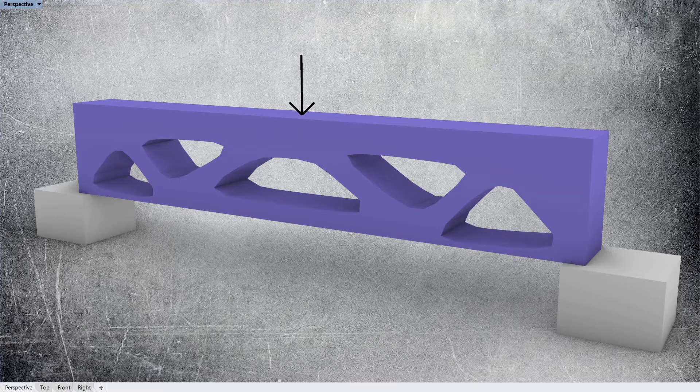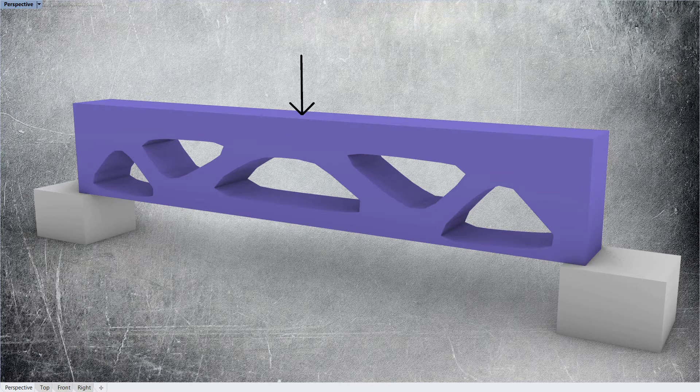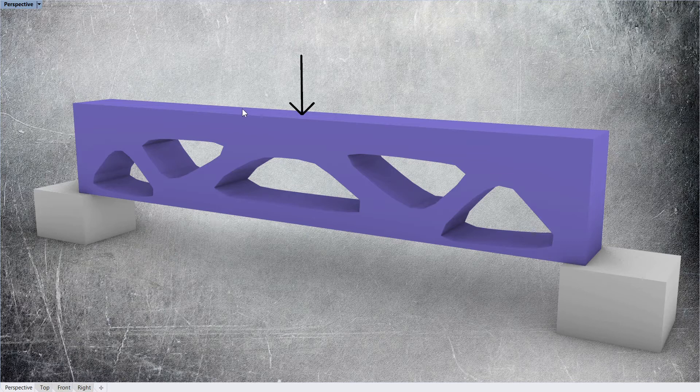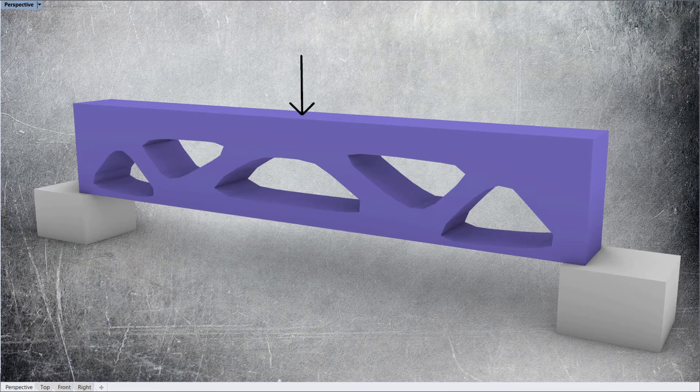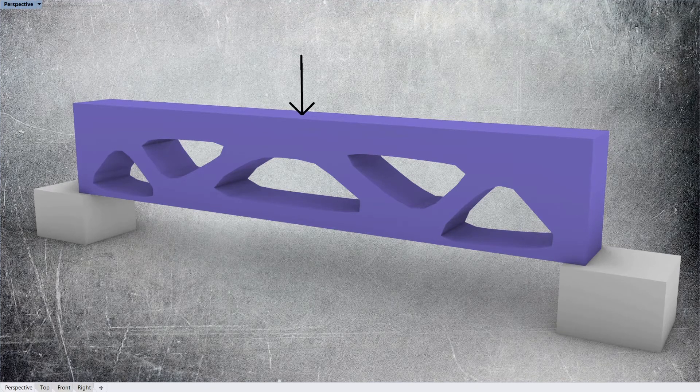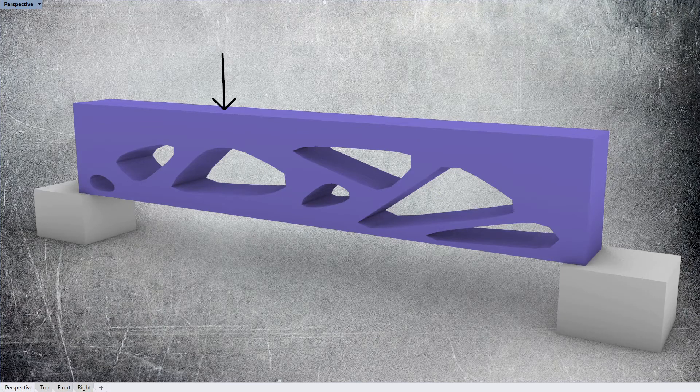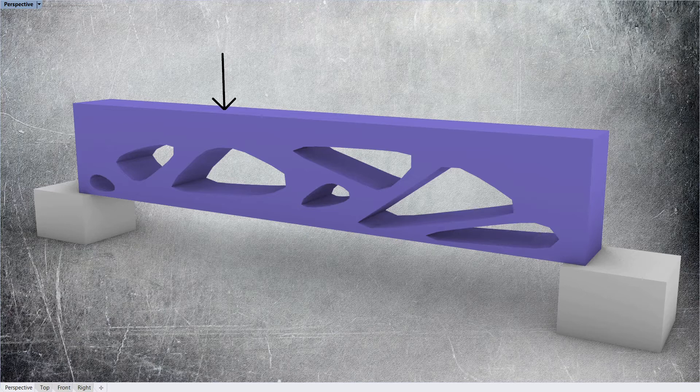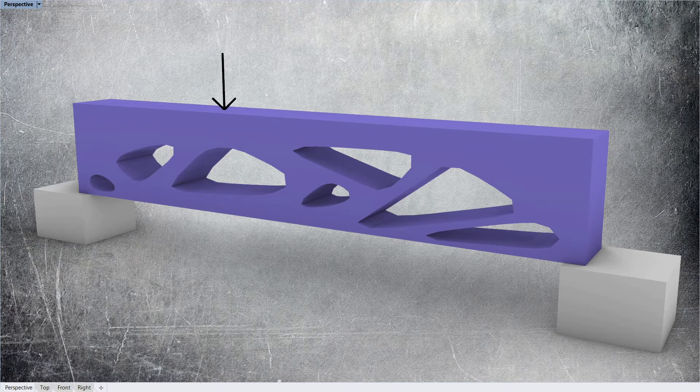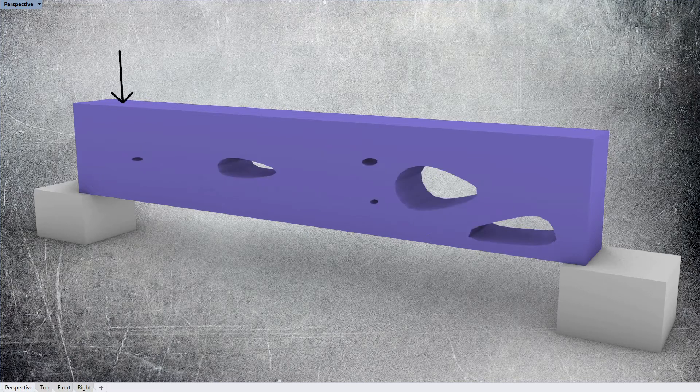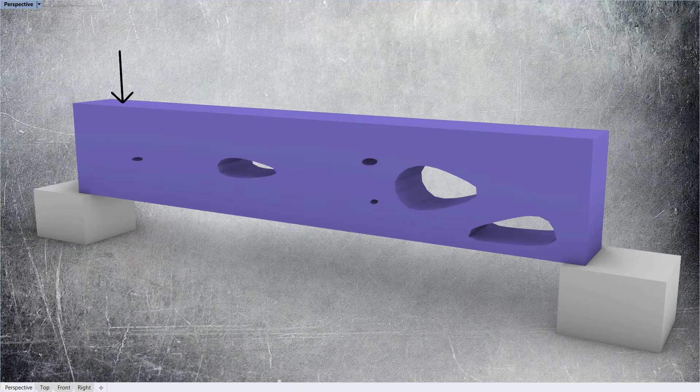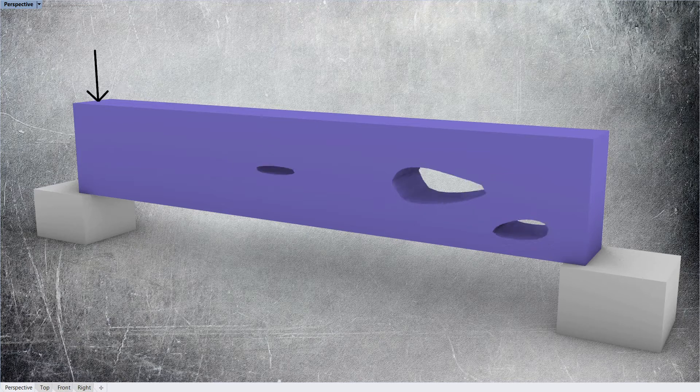So we can have a look at what happens if we move the load so it's not central. And if I move this load back a little bit, we can see what the algorithm thinks it can remove from that block. And if I keep going back even further, it comes up with something like that. Or right back to the edge, something like that.